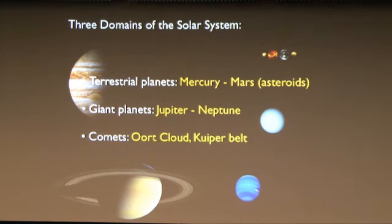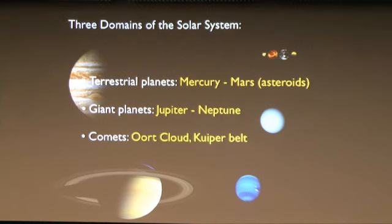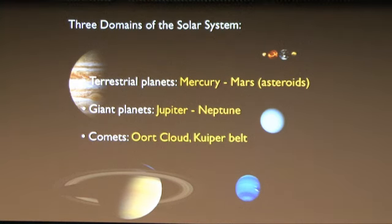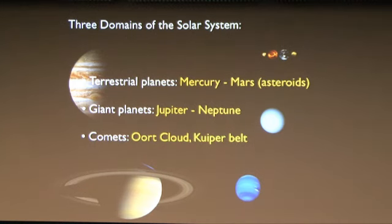These bodies formed by binary accretion — bits of dust stick together to make bigger bits, which stick together to make grains of sand, then pebbles, then boulders, then asteroids, then embryos, then planets. In the case of the Earth, the whole process took about 50 to 100 million years. We know a lot about terrestrial planets because we live on one. We send spacecraft there and have pretty detailed ideas about how they formed.